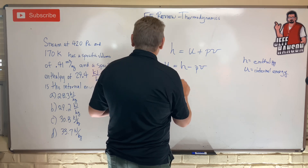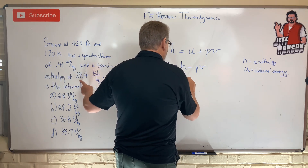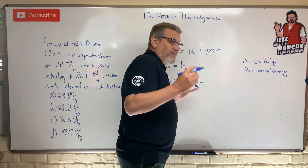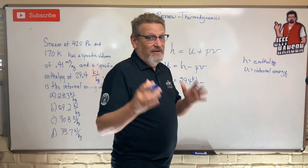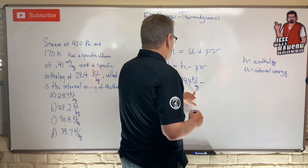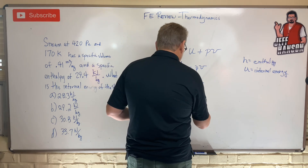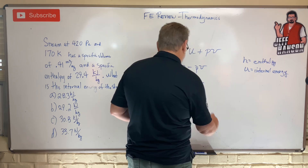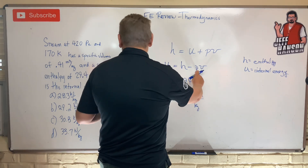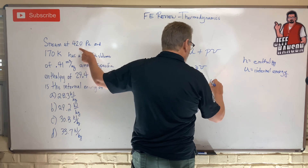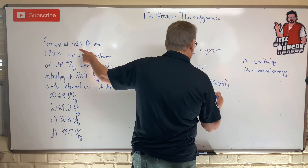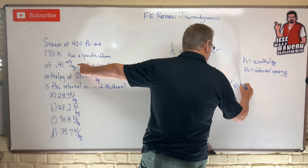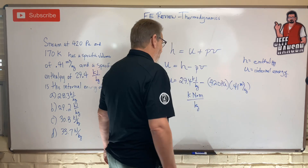So u equals h — enthalpy is given as 29.4 kilojoules per kilogram — minus p times v. Now the main thing here, like every problem, is units, units, units. A joule is a newton meter, so 29.4 kilojoules per kilogram is 29.4 kilonewton meters per kilogram. For pressure: 420 pascals, times specific volume 0.41 meters cubed per kilogram.